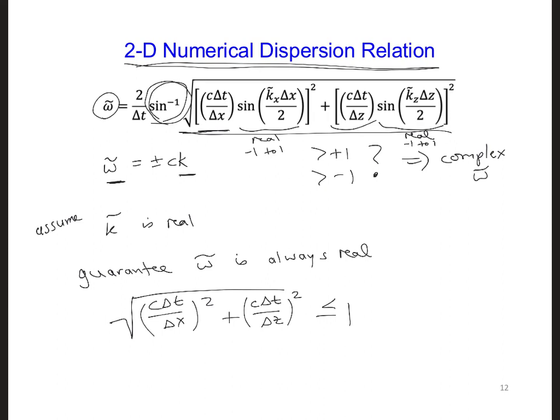So now try solving this expression for delta t, because then you will have solved for the maximum time step increment that we're allowed to use in a two-dimensional FDTD code.